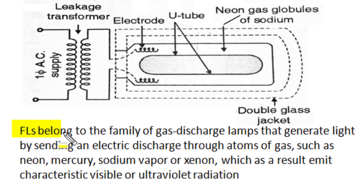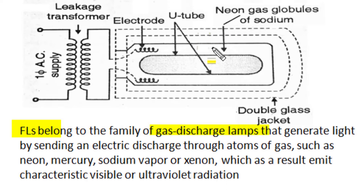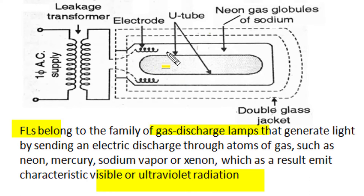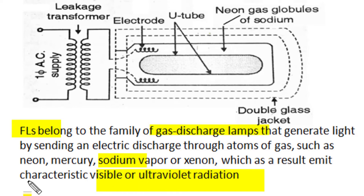Discharge in mercury at ordinary pressure can emit only ultraviolet radiation. Only at high pressure can mercury vapor emit a significant portion of characteristic blue light along with ultraviolet radiation. Phosphor material is used to convert that ultraviolet into visible light. Sodium vapor lamps and neon vapor lamps can emit characteristic visible light directly.